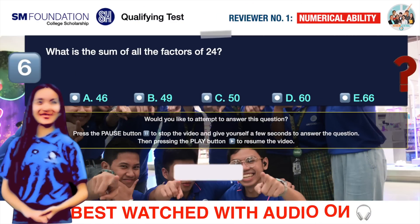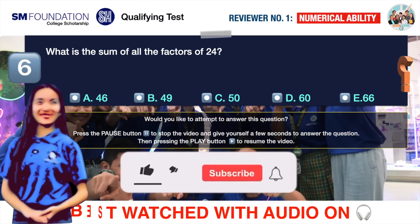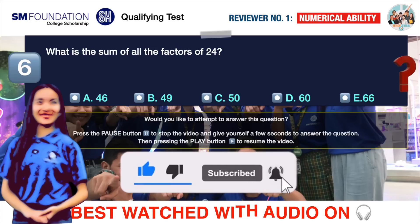Question number 6. What is the sum of all factors of 24? A 46, B 49, C 50, D 60, E 66.